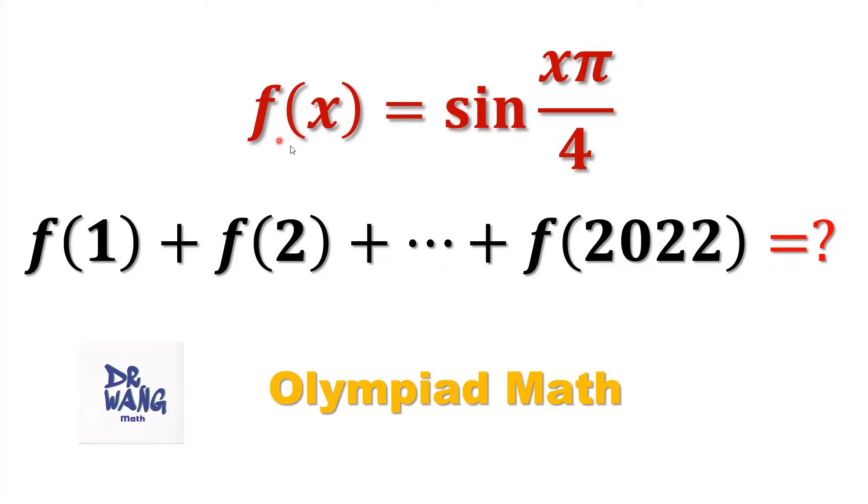Today we discuss trigonometry. Here is the definition for f of x. It is equal to sine of x times pi over 4. We want to find the sum of f of 1 plus f of 2 plus until f of 2022. Totally we have 2022 items here. We want to find the sum.